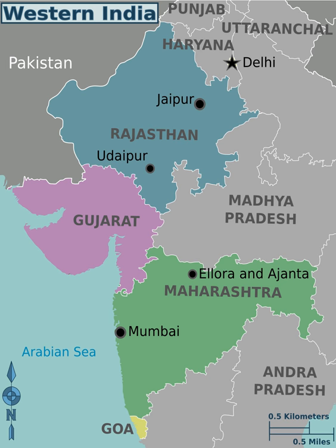The region is highly industrialized, with a large urban population. Roughly, Western India is bounded by the Thar Desert in the north, the Vindhya Range in the east and north, and the Arabian Sea in the west. A major portion of Western India shares the Thar Desert with North India and Pakistan, and the Deccan Plateau with South and Central India.